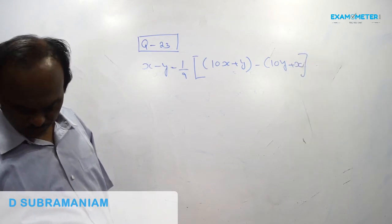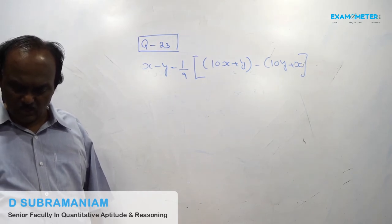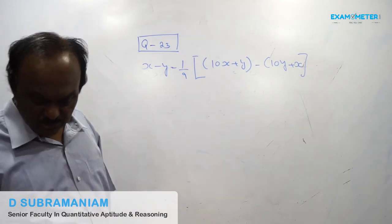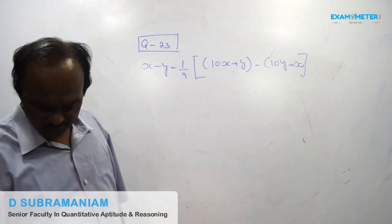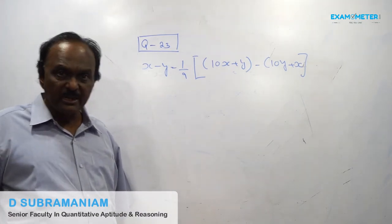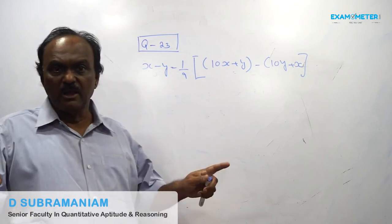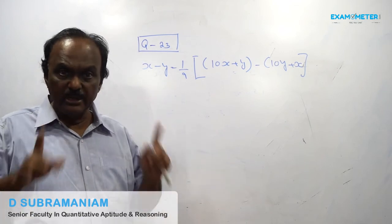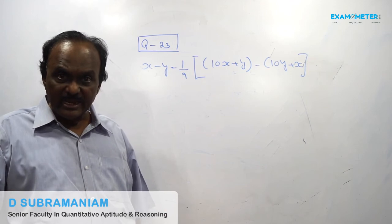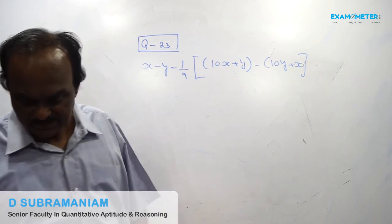Question number 24: A certain number when successively divided by 8 and 11 leaves remainders 3 and 7 respectively. Then the complete remainder is? A remainder obtained by dividing a given number by the method of successive division is called the complete remainder.